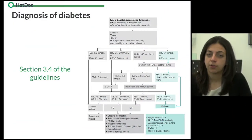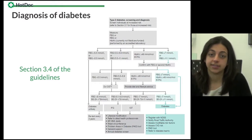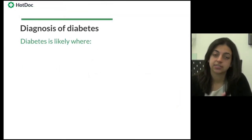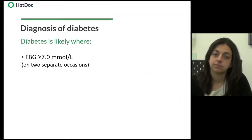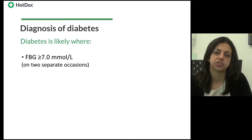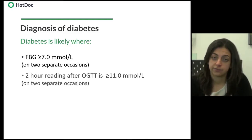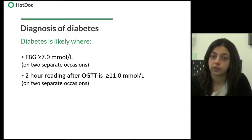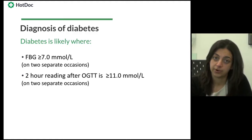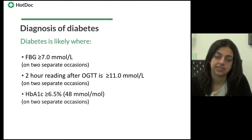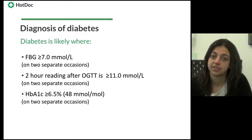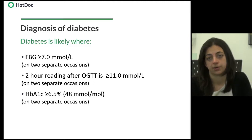An area worth reviewing is how a diagnosis of diabetes is made. The guidelines have a handy screening and diagnosis algorithm. In short, diabetes is likely where: fasting blood glucose is equal to or over 7.0 mmol/L on two separate occasions; or a two-hour reading after an oral glucose tolerance test is equal to or above 11.0 mmol/L on two separate occasions; or if the HbA1c is equal to or above 6.5% (48 mmol/mol) on two separate occasions.